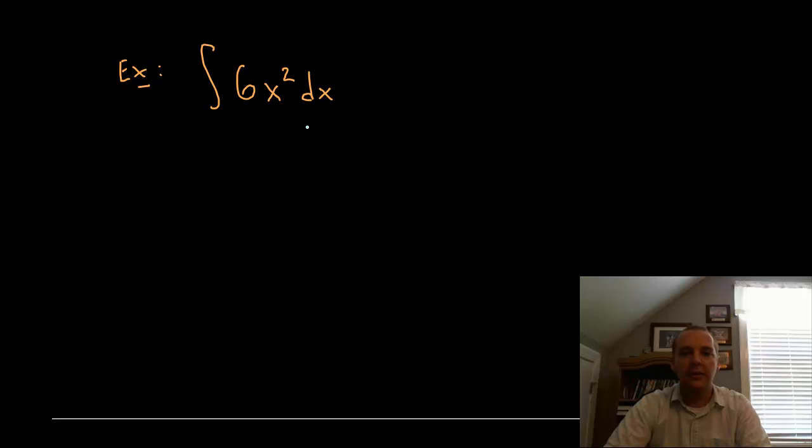Alright here's one that has a constant multiple here. This is what I like to call a tag along constant. It's the constant multiple rule. We'll just hold on to the 6. The integral of x squared would be x cubed over 3, using the rule we just discovered, plus c. And then when we're done we should always try to clean it up best we can. And 6 over 3 would be 2x cubed plus c.